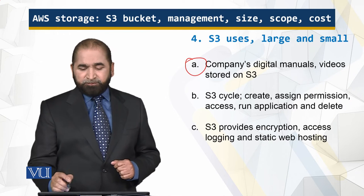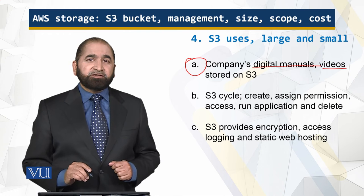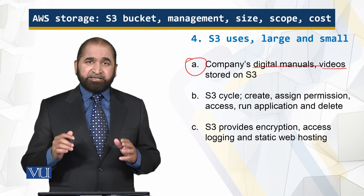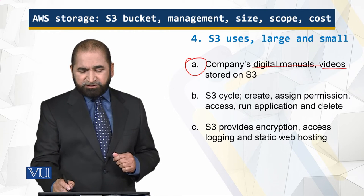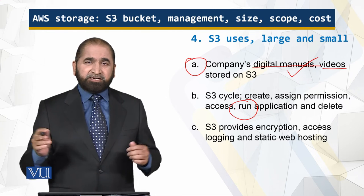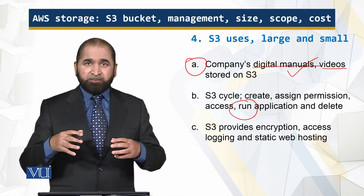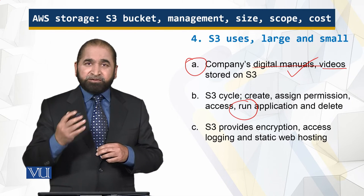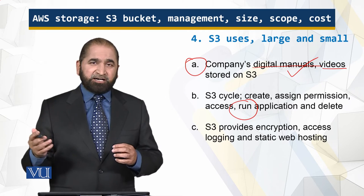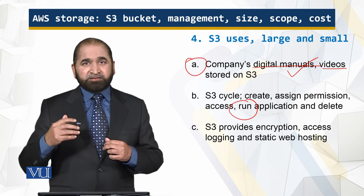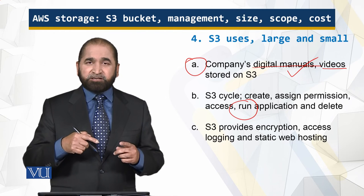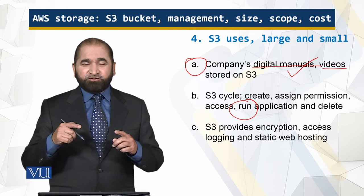S3 is used by companies because they have digital manuals and videos that can encompass terabytes of data. One key advantage is that once data is on S3, there is no traffic load on the company's website, so there is no congestion there. When visitors are viewing manuals or videos about the company, the traffic takes place on Amazon Web Services servers, not at the company's website or the company's internet connection. So the response is good.